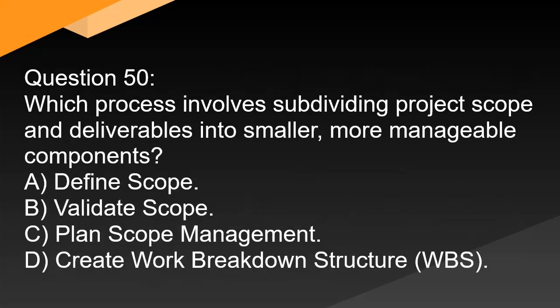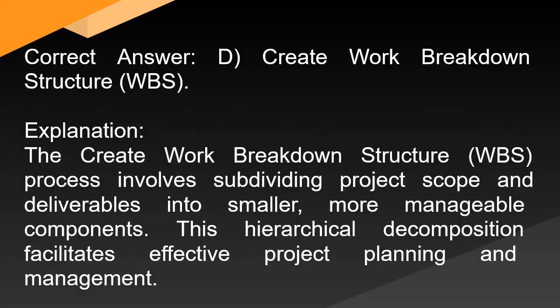Question 50: Which process involves subdividing project scope and deliverables into smaller, more manageable components? A. Define scope. B. Validate scope. C. Plan scope management. D. Create work breakdown structure (WBS). Correct answer: D. Create work breakdown structure (WBS). Explanation: The create WBS process involves subdividing project scope and deliverables into smaller, more manageable components. This hierarchical decomposition facilitates effective project planning and management.